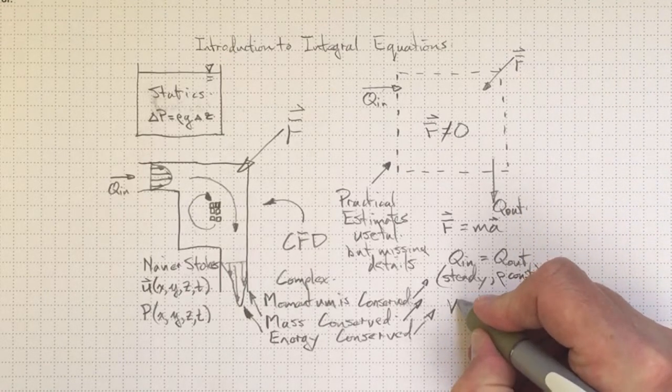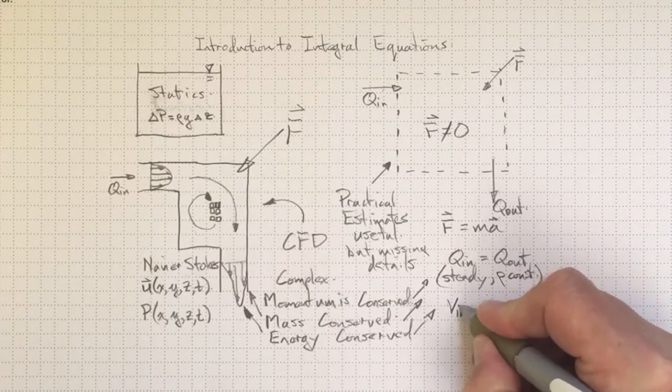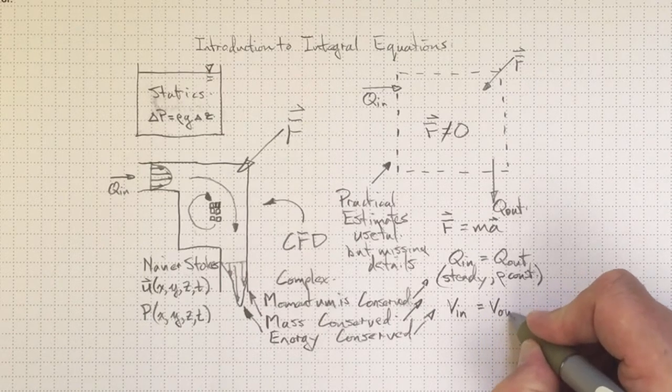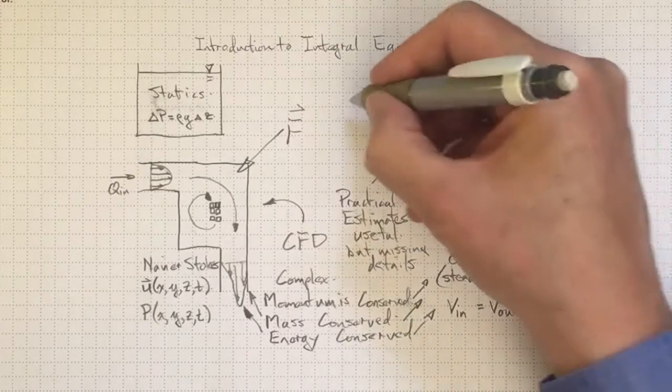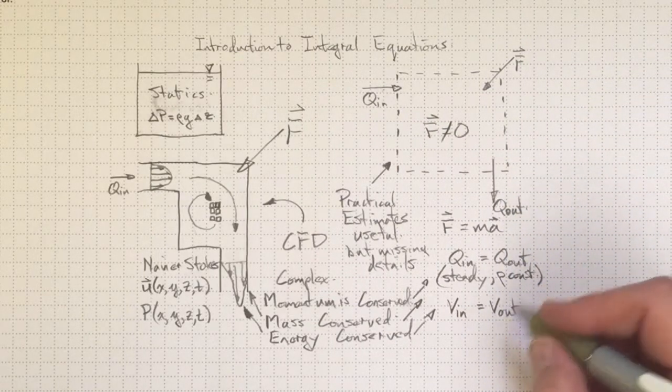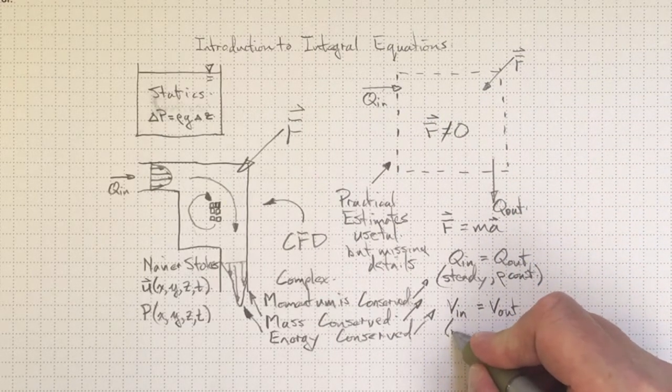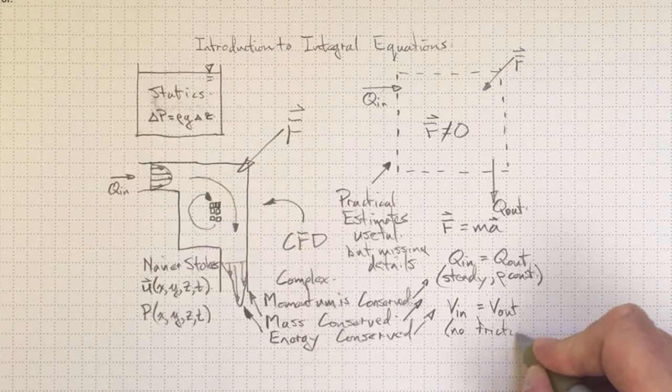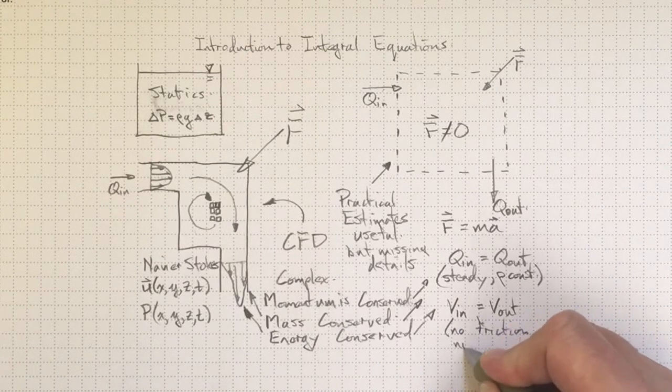That would lead me, in the simplest sense, to have the velocity in must be equal to the velocity out. Otherwise, the kinetic energy of the fluid would have changed. So that's going to require assumptions that I've got no friction and no work done.